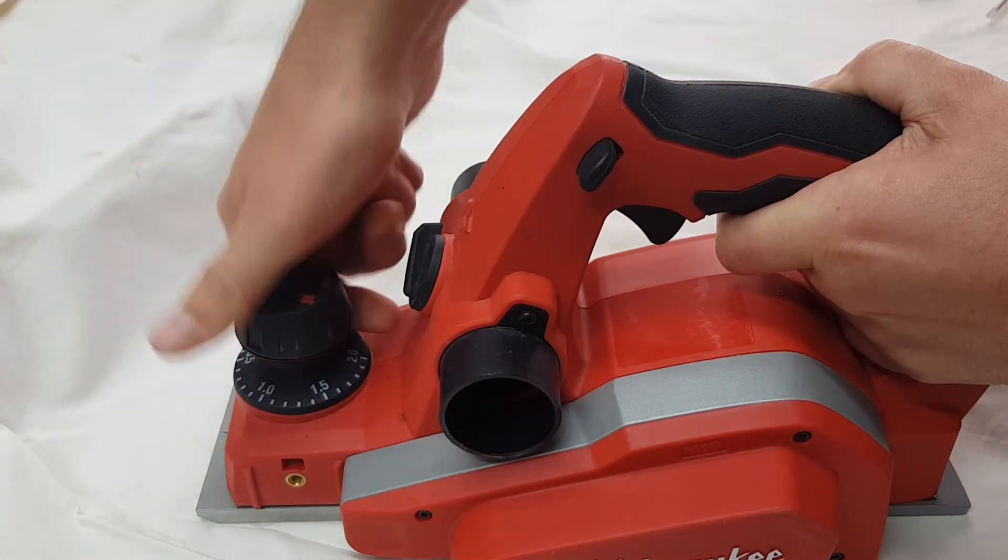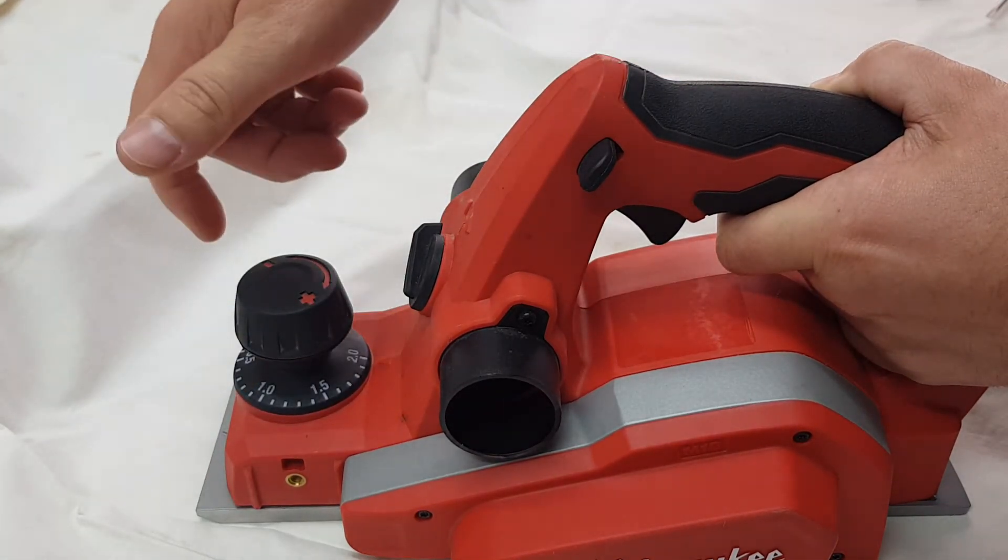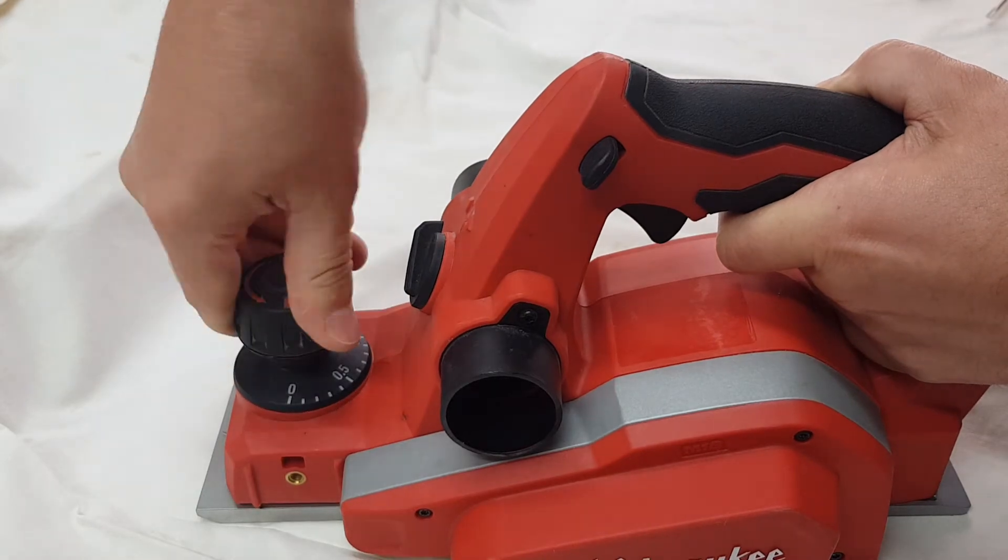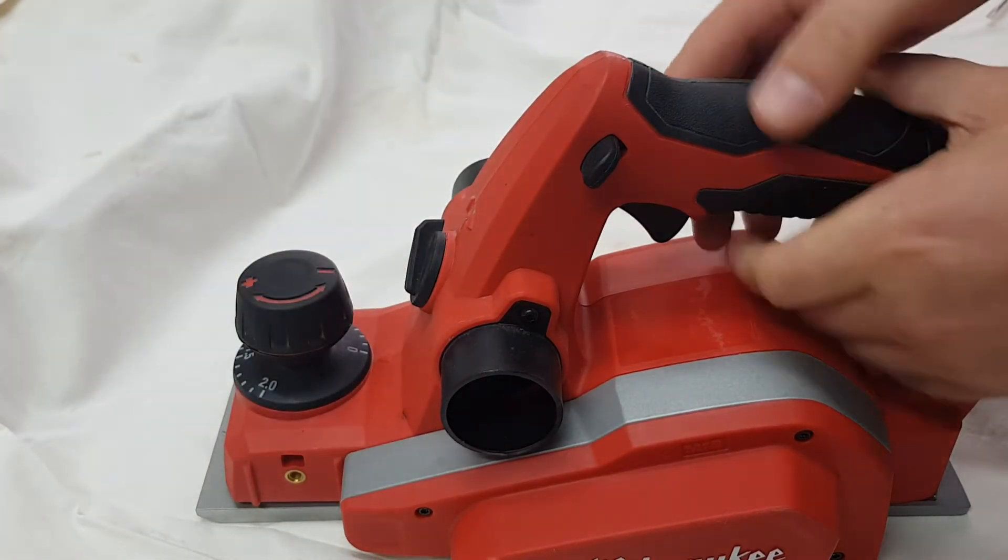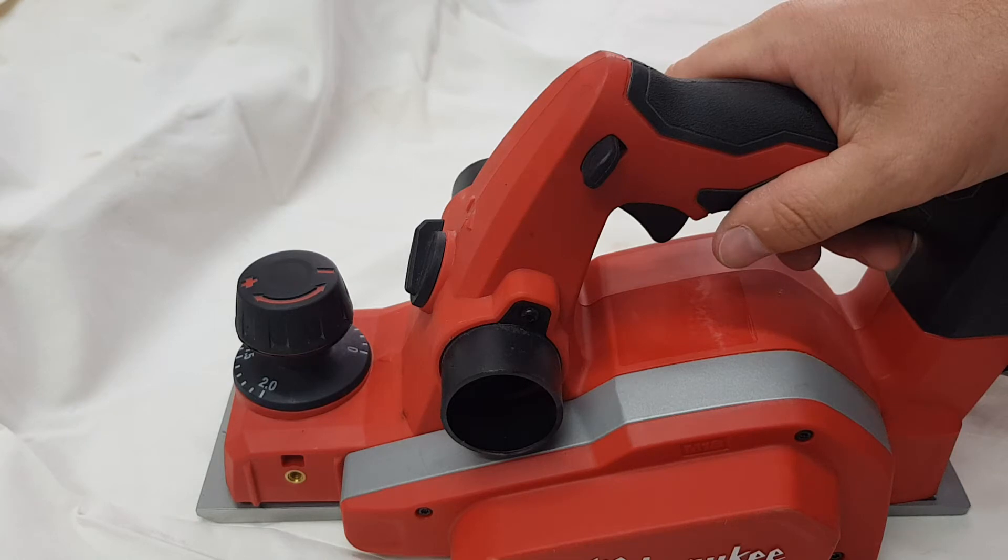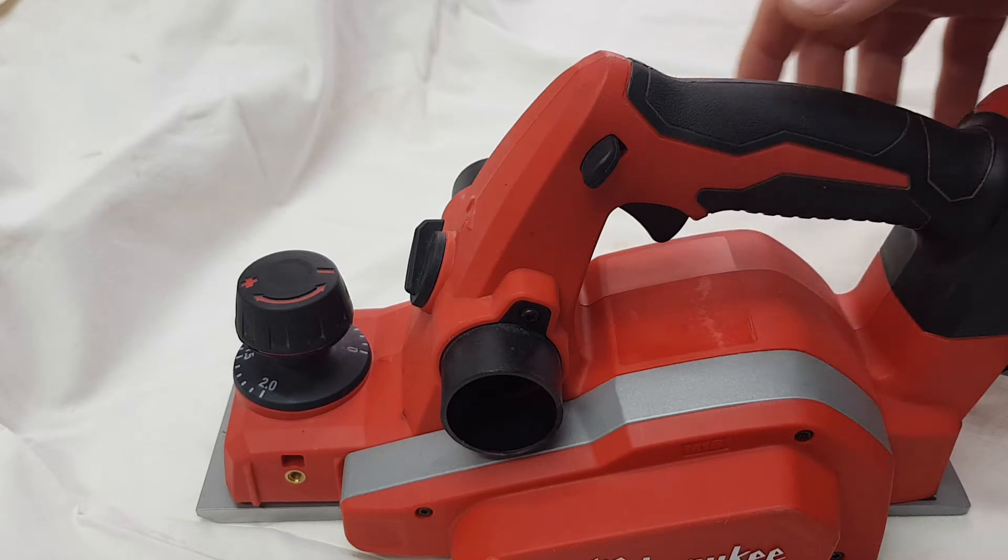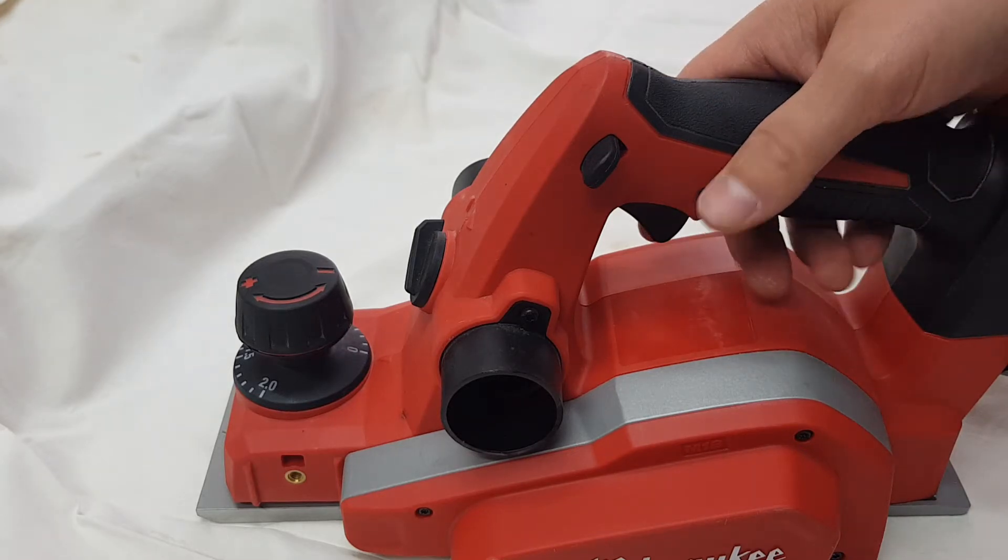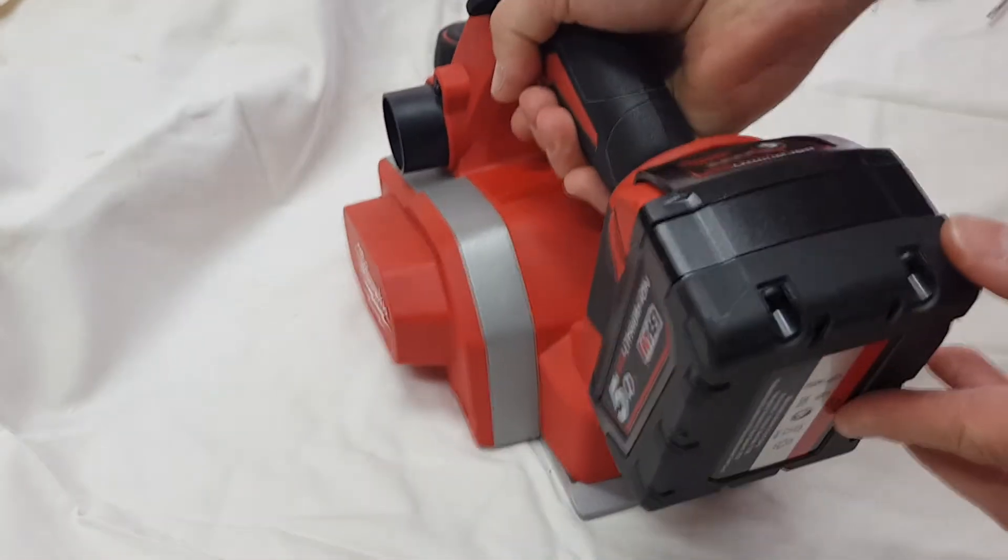So if you change the blades or you're having trouble with it not taking off the correct amount of material, this is how to adjust the front shoe calibration. First, make sure you always take out the battery—don't want to find out the hard way.